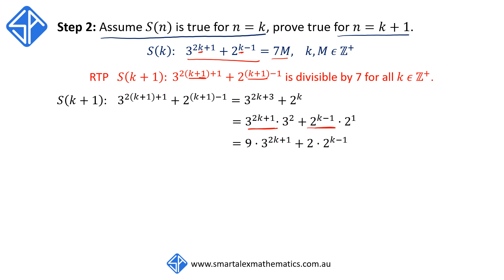So when we simplify this, we're going to get S(k plus 1) being equal to 9 times 3 to the 2k plus 1 plus 2 times 2 to the k minus 1. And we're going to split up the last term, 2 times 2 to the k minus 1 into 9 times 2 to the k minus 1 minus 7 times 2 to the k minus 1.